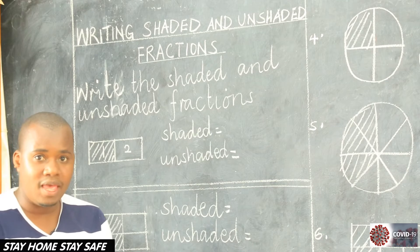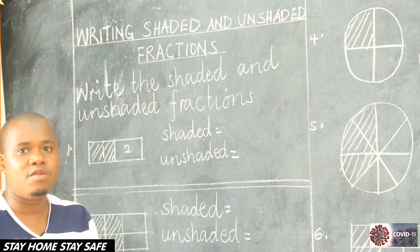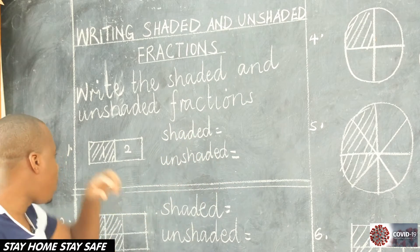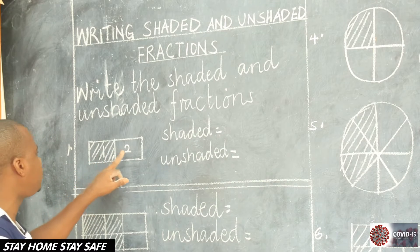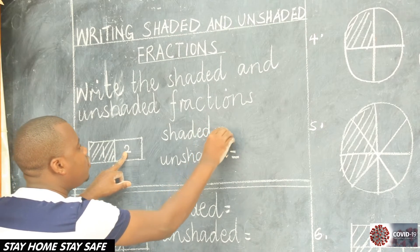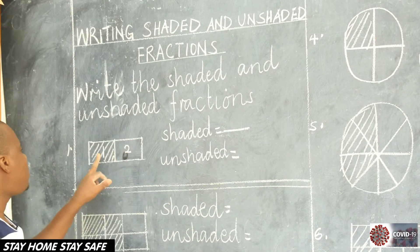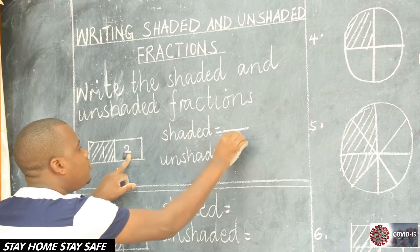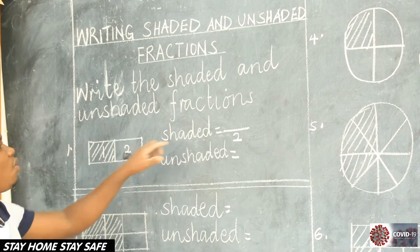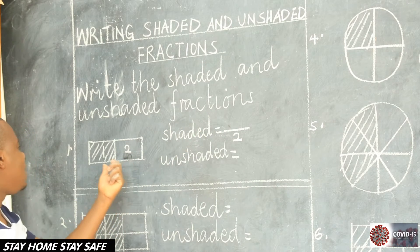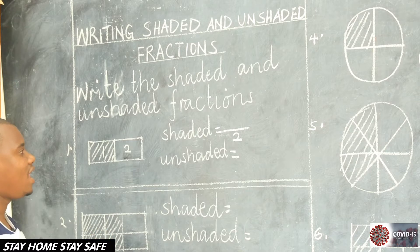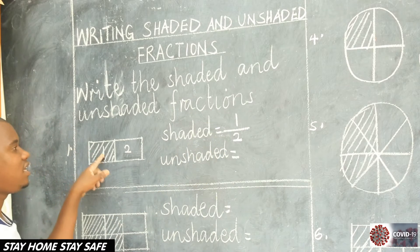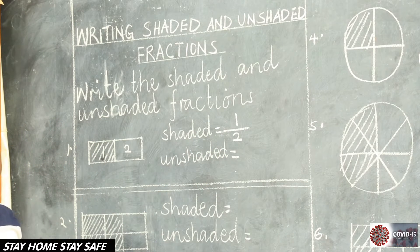My dear children, today's lesson is very simple and interesting. We are going to look at writing the shaded and unshaded fractions. Meaning, we are going to face some diagrams and illustrations, whereby a certain number is shaded and a certain number is not shaded. What we are going to do is look at these diagrams and see how do we find the shaded and how do we find the unshaded.